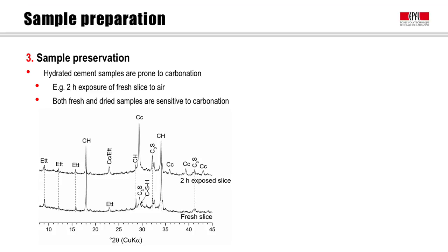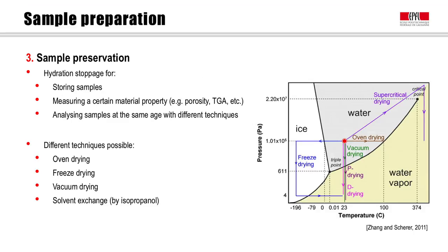Hydration stoppage does reduce the sensitivity somewhat, but cannot overcome this effect. Most characterization techniques of hydrated cement need the hydration to be stopped or the sample to be dried. Even if hydration stoppage is not strictly necessary for XRD-based studies, this is common practice mostly for practical reasons. Arresting the hydration enables sample storage and characterization of the same sample at the same degree of hydration by different techniques. The primary aim of the various available methods for hydration stoppage is that the phase composition in case of XRD is preserved as much as possible.